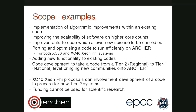Here are a few examples of ECSE work that's been funded: implementing algorithmic improvements within an existing code, improving the scalability of software on higher core counts, improvements to the code which allow new science to be carried out, and porting and optimizing a code to run efficiently on ARCHER — which applies to both the XC30 and Xeon Phi systems. It could also be about adding new functionality to existing codes, or code development which takes a code from a Tier 2 regional system to the national level, potentially bringing new scientific communities onto the ARCHER platform.